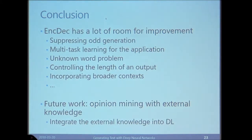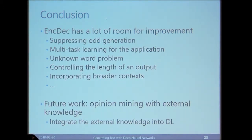This is the end of my talk. The encoder-decoder model has a lot of room for improvement: suppressing odd generation, multitask learning, handling unknown words, controlling output length, and incorporating broader context. I also have another project for mining opinions on the web with external knowledge, and I want to integrate external knowledge into deep learning models, but I won't cover that here. Thank you very much.